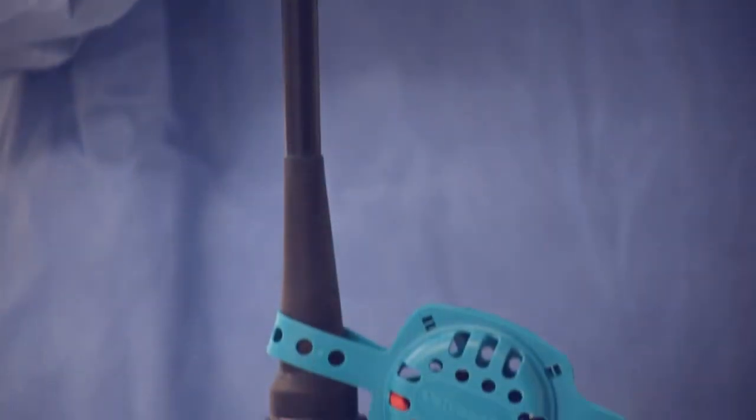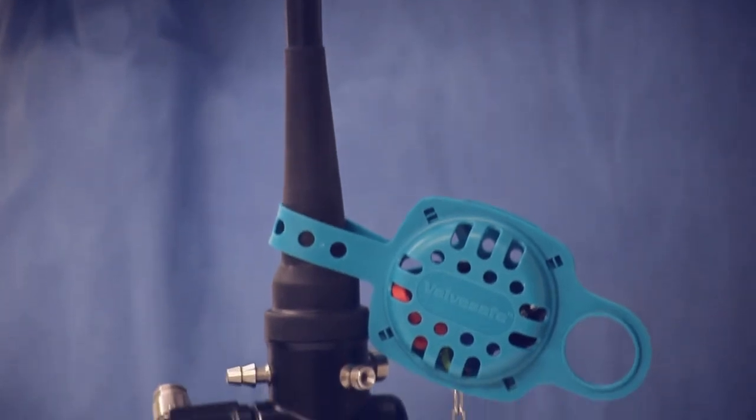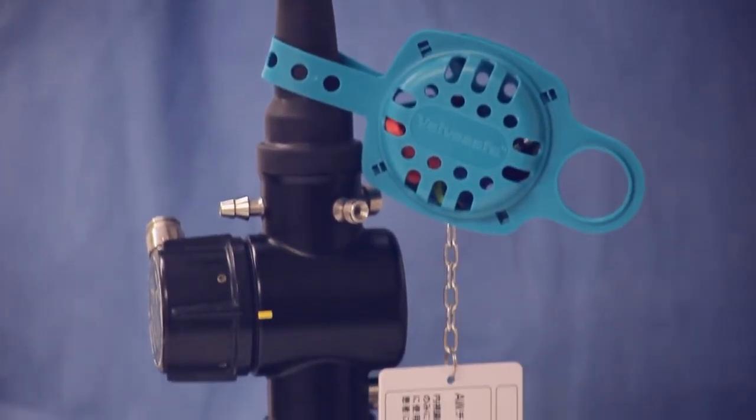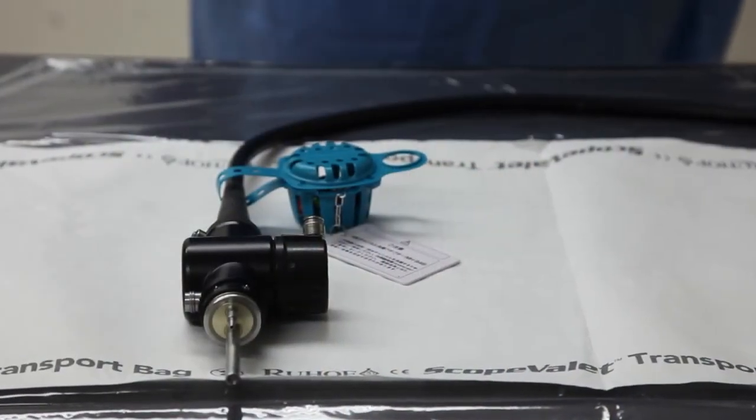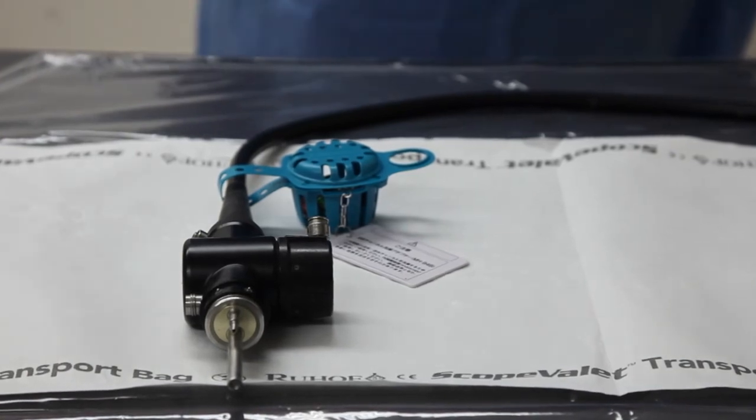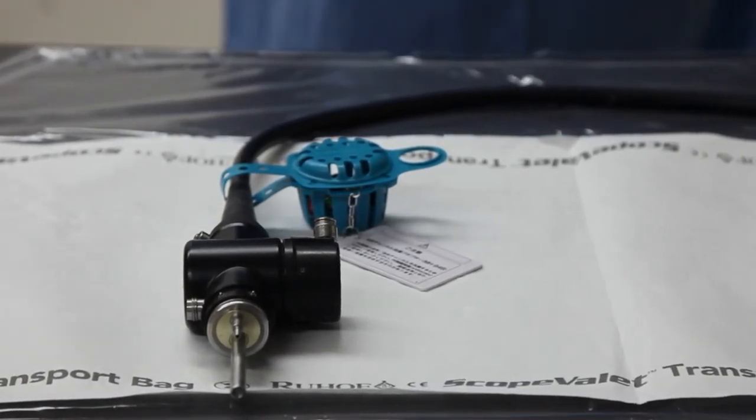ValveSafe remains on the endoscope after the AER process and continues to remain on the scope during any storage in a drying cabinet and transportation via a tray system. The ValveSafe should remain on the scope until the scope is taken back through to the procedure room and is ready to be used again.